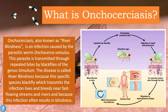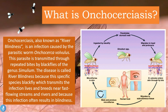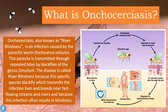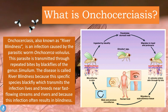The parasite is transmitted through repeated bites by black flies of the genus Simulium. The disease is called River Blindness because the specific species of black fly which transmits the infection lives and breeds near fast flowing streams and rivers, and because this infection also results in blindness. The infection occurs when an individual is repeatedly bitten by this black fly from the Simulium species.